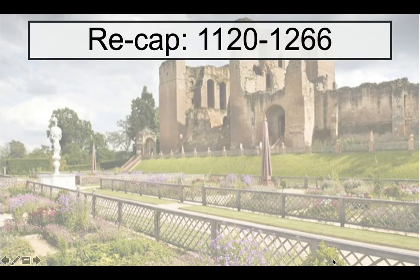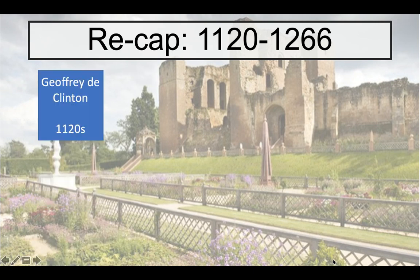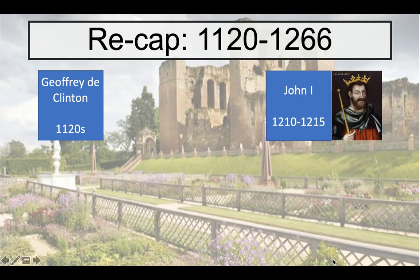Before we do this, let's do a quick recap of the previous video where we looked at the building carried out in Kenilworth's first 150 years of existence, and in particular we looked at the building work undertaken by Geoffrey de Clinton first of all and then by John I.